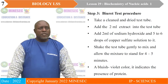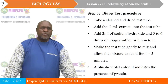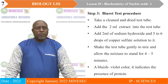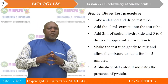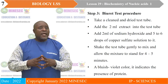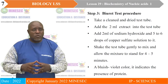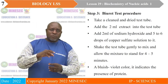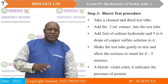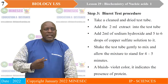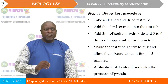So the biuret test reagent is the most used reagent for testing proteins. You take a clean and dry test tube, add two millilitres of the filtered extract. The first step of the test is to add two millilitres of sodium hydroxide. When you finish adding sodium hydroxide, add five to six drops of copper sulfate. As you add the drops of copper sulfate, you begin to shake vigorously and allow it to stand for four to five minutes. You will notice a bluish-violet coloration or precipitate, which indicates the presence of protein.